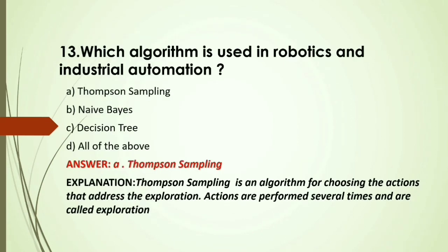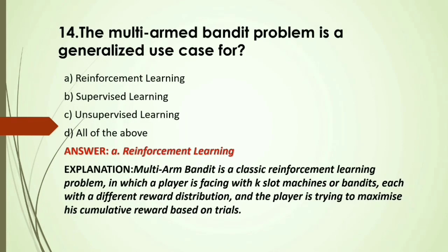MCQ: Which algorithm is used in robotics and industrial automation? Options: A) Thompson sampling; B) Naive Bayes; C) Decision tree; D) All of the above. Answer: A, Thompson sampling — it is an algorithm for choosing the action that addresses exploration; actions are performed several times and are called exploration.